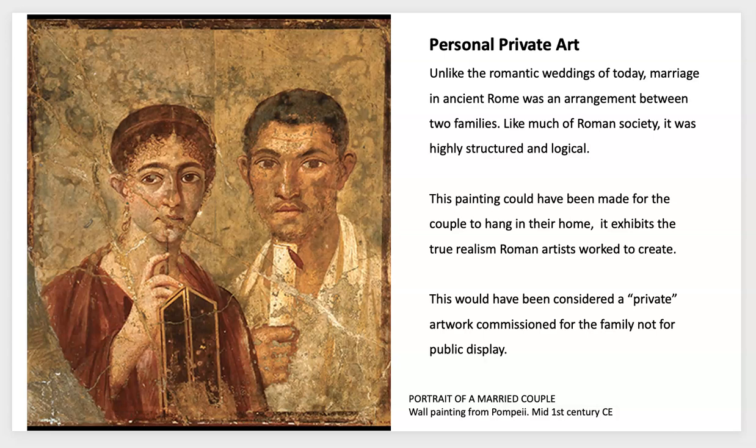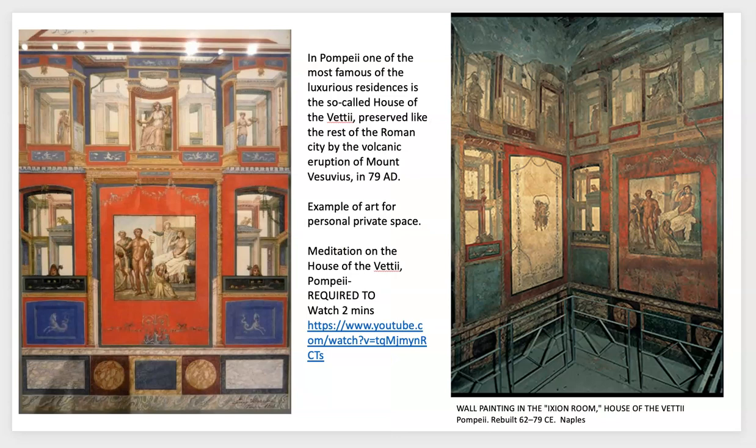Most marriages were arranged, especially in the upper class — you would have to marry someone of the same class and hopefully marry up. It's interesting to think about the realism seen in a lot of Roman artwork. We're really moving away from the artistic conventions of Egyptian art and starting to see details of expression and personality in both paintings and sculpture.